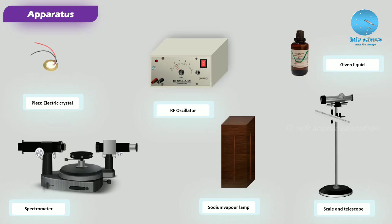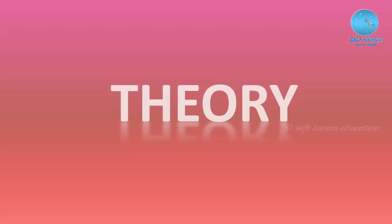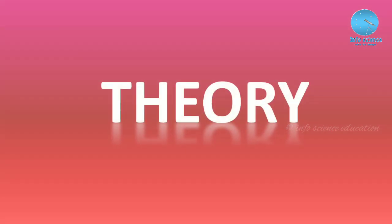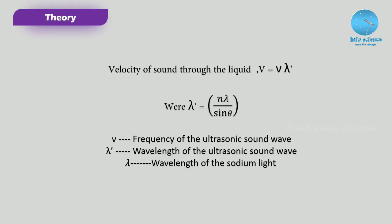The apparatus required are: a piezoelectric crystal, an RF oscillator, the given liquid, a spectrometer, a sodium vapor lamp, a scale, and a telescope. These were the main apparatus required for this experiment. Now we are moving to the theory of this experiment.